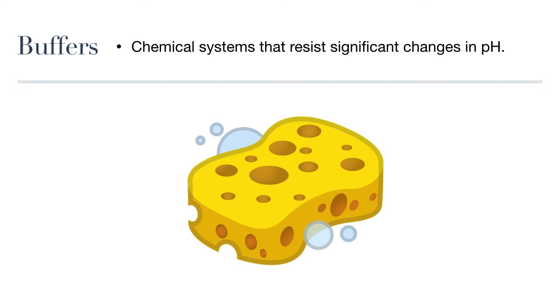So, what do buffers do? Buffers essentially act like sponges. They absorb hydrogen ions when there's too much of them, when a solution becomes more acidic, and they release them when there's too little, or when the solution becomes more basic.